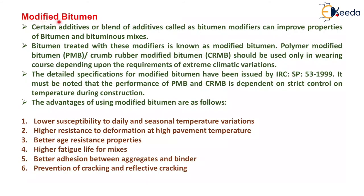Next is modified bitumen. Certain additives or blends of additives called bitumen modifiers can improve the properties of bitumen and bituminous mixes. Bitumen treated with these modifiers is known as modified bitumen. Polymer modified bitumen and crumb rubber modified bitumen should be used in wearing courses depending upon requirements of extreme climatic variations. The detailed specifications for modified bitumen have been issued by Indian Roads Congress SP 53:1999. It must be noted that the performance of PMB and CRMB is dependent on strict control of temperature during construction.